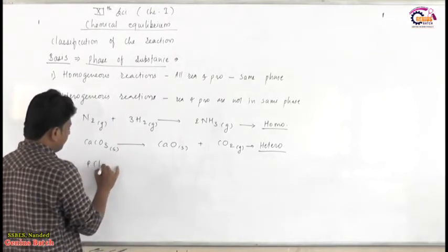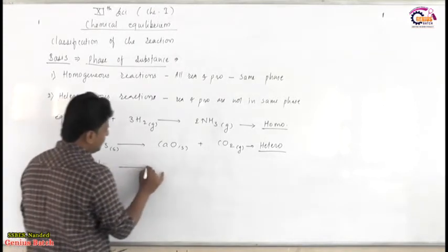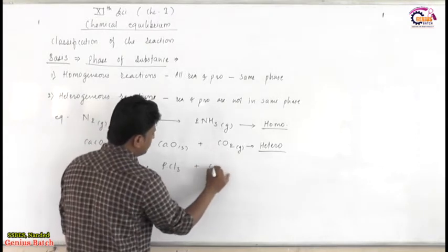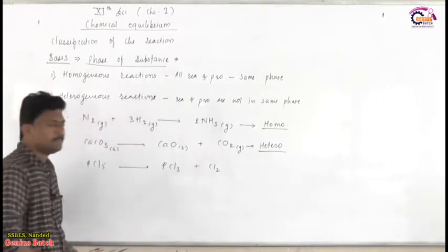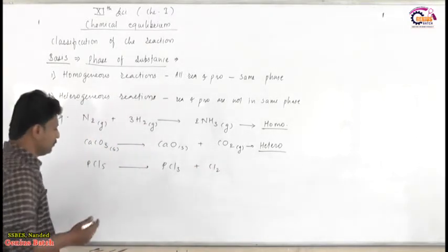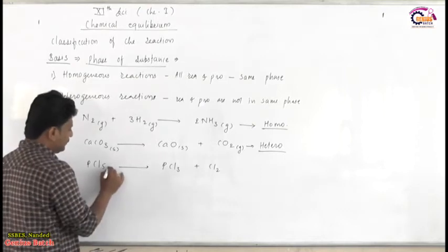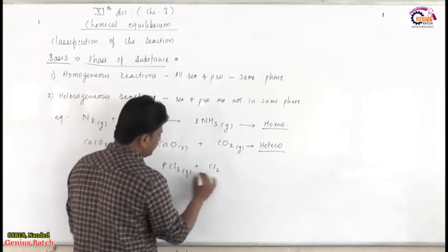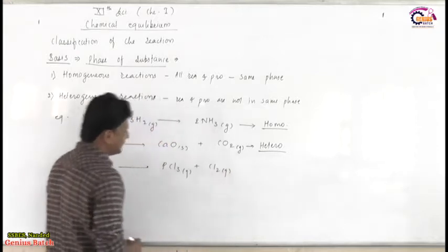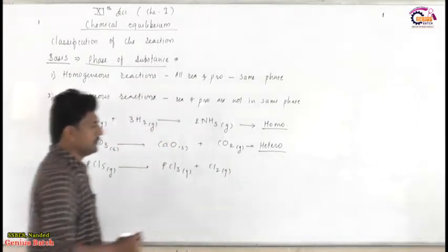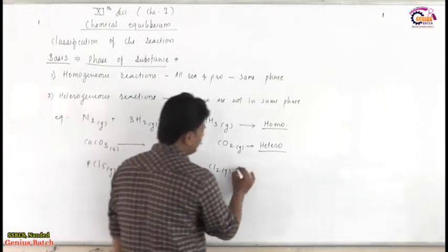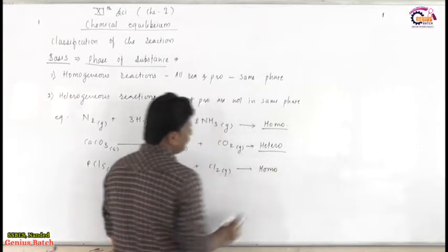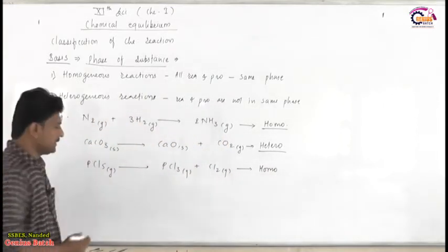Another example: PCl5 is thermally decomposed into PCl3 plus Cl2. This would be a Homogeneous reaction because PCl5 is gaseous, and both products PCl3 and Cl2 are also gaseous. So this one is homogeneous.